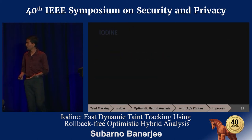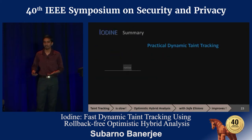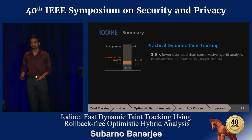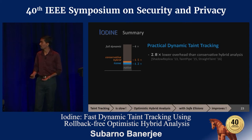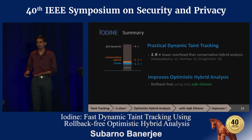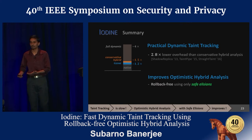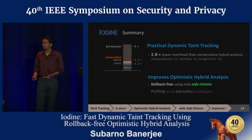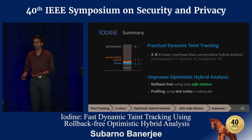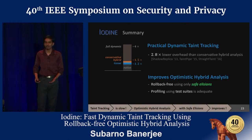To conclude, Iodine enables practical low-overhead taint tracking using optimistic hybrid analysis, which makes expensive dynamic analysis much faster by assuming likely program invariants. But this leads to a major problem — unbounded rollbacks in case the invariants fail — which is critical for running on live executions. We fix this by restricting to only safe elisions, enabling fast taint tracking with correct semantics without requiring rollbacks. We also show that profiling on existing test suites is adequate for most of the performance benefits.